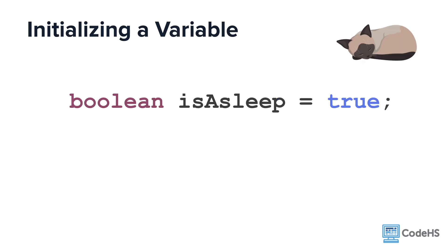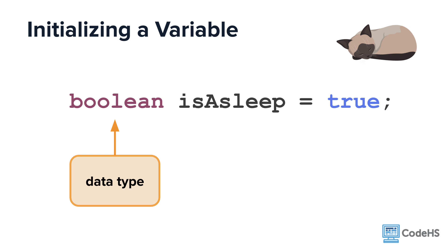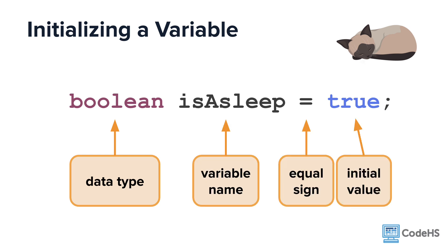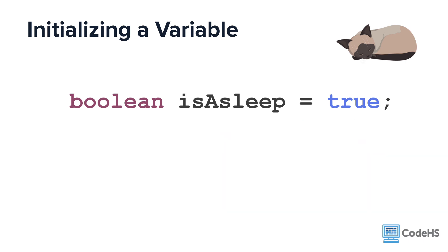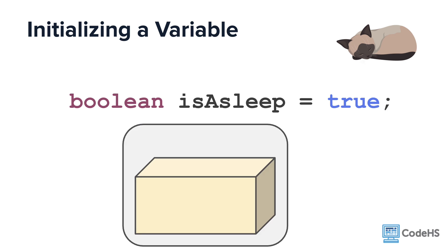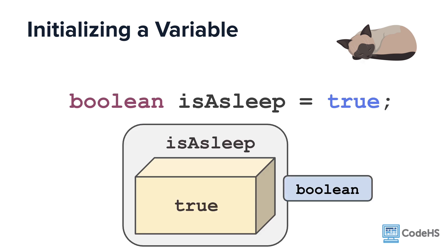You can also declare and initialize a variable in one line of code. To do this, you include all of the same components when you declare and initialize on separate lines. You include the data type, variable name, and then on the same line, you include the equal sign and initial value. This statement creates a box with a boolean data type called isAsleep and stores the value of true inside of it.